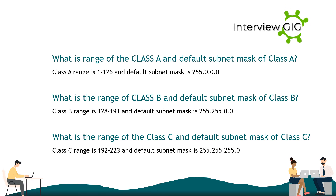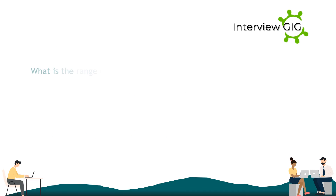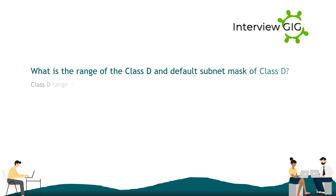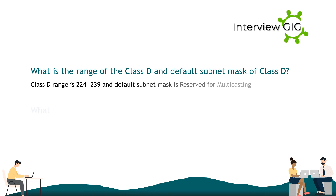What is the range of Class C and its default subnet mask? Class C range is 192–223 and default subnet mask is 255.255.255.0. What is the range of Class D and its default subnet mask? Class D range is 224–239 and the default subnet mask is reserved for multicasting.